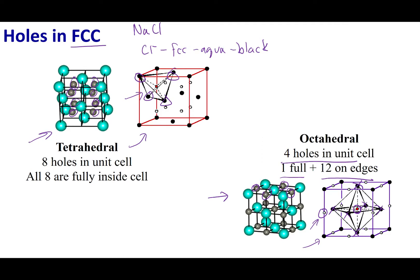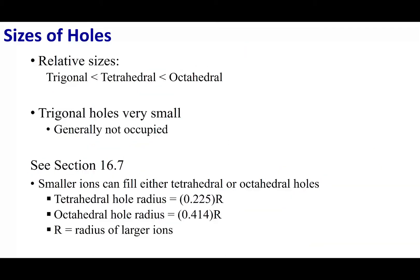These are the holes in FCC. Understand that these are holes — they can be filled, but they don't necessarily have to be filled. You can think of them like parking spots: just because you have a parking spot doesn't mean it's filled with a car. The trigonal hole is smaller than the tetrahedral hole, which is smaller than the octahedral hole. Trigonal holes are really, really small and are oftentimes not filled — you need a great disparity in ionic size. Most of the time, tetrahedral and octahedral holes are going to be filled by the smaller atom.